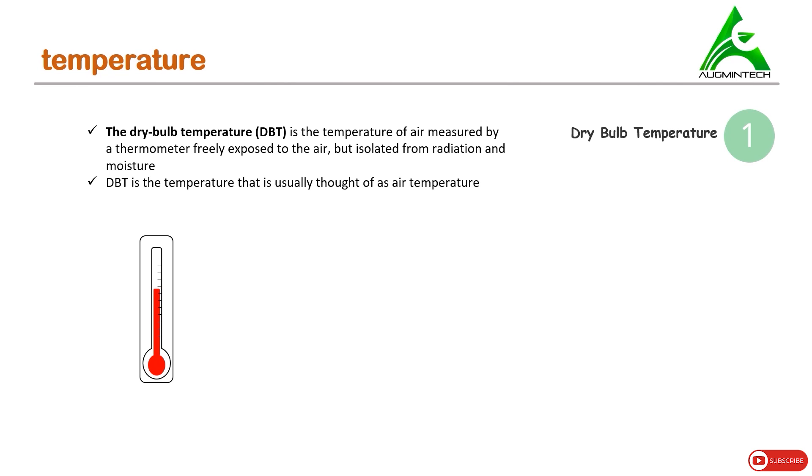Dry bulb temperature is the temperature that is usually thought of as air temperature. So in general, the temperature that we talk about in day to day life is the dry bulb temperature. It shows the amount of heat content in the air. The dry bulb temperature is not equal to heat content, it just gives you an idea of the amount of heat content in the air. If the thermometer is placed near to a hot body, the reading shown will be more, and obviously near to a cold body the reading will be less.